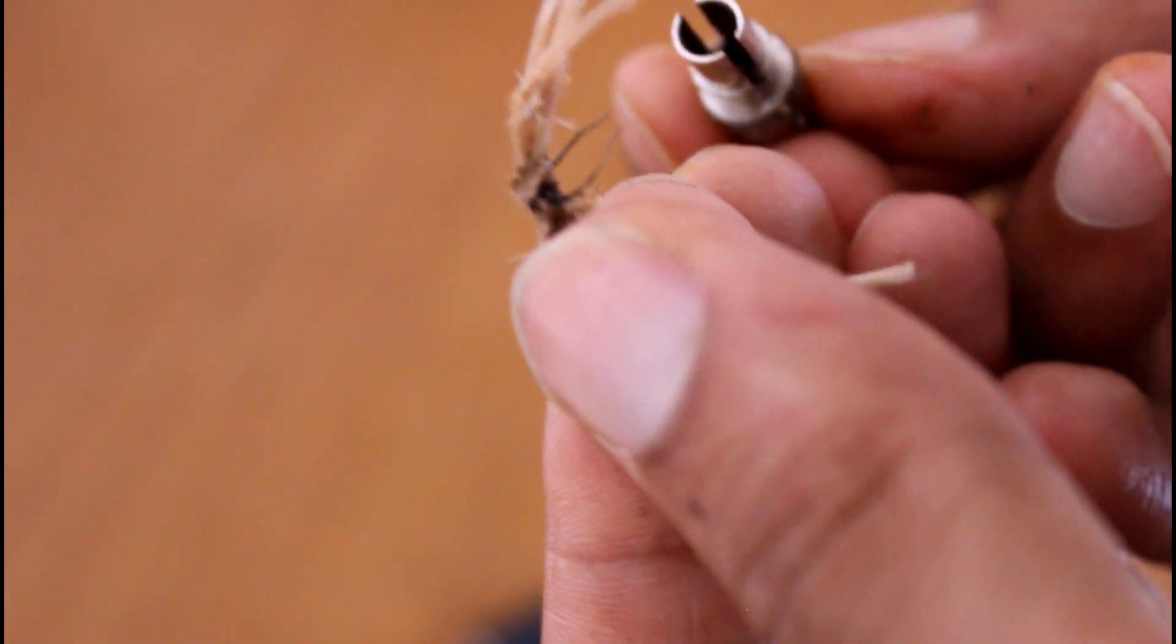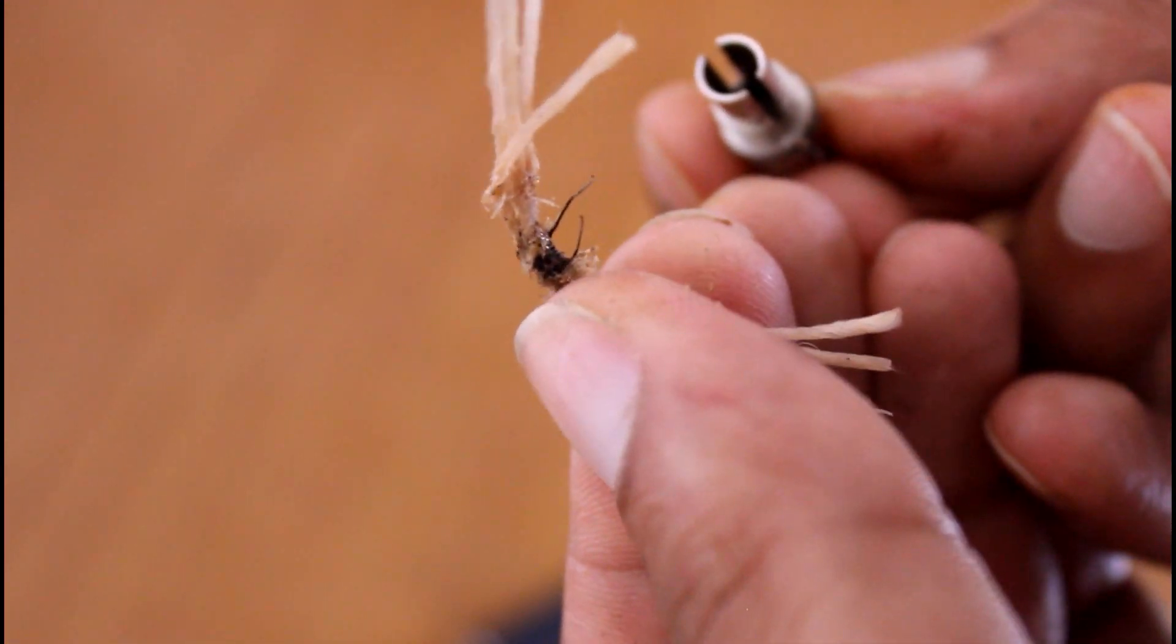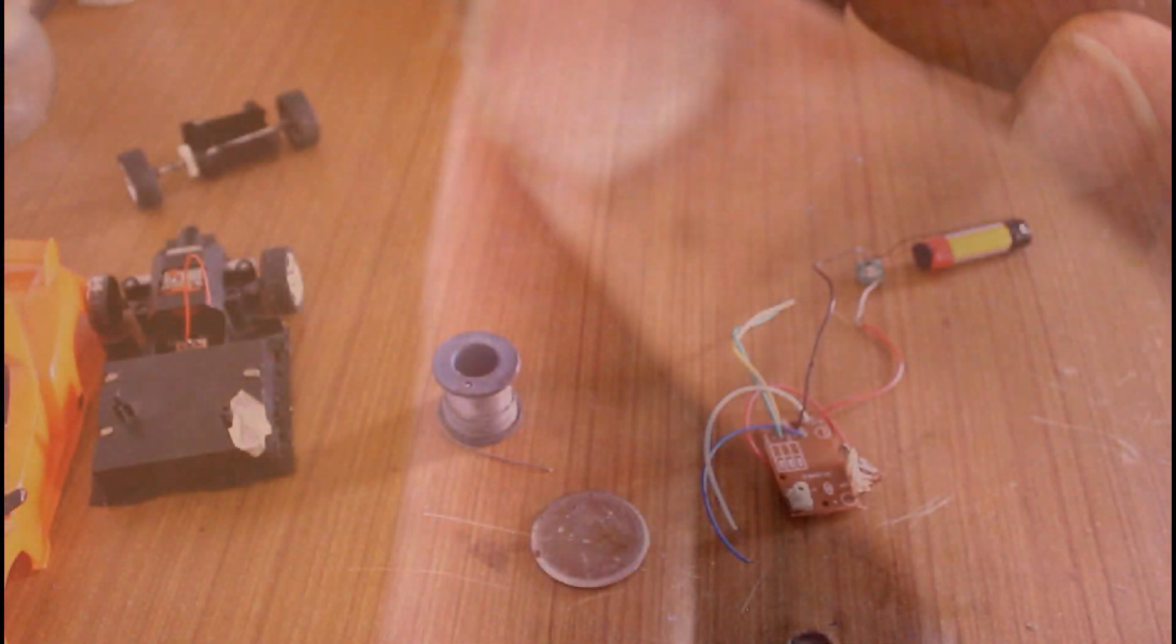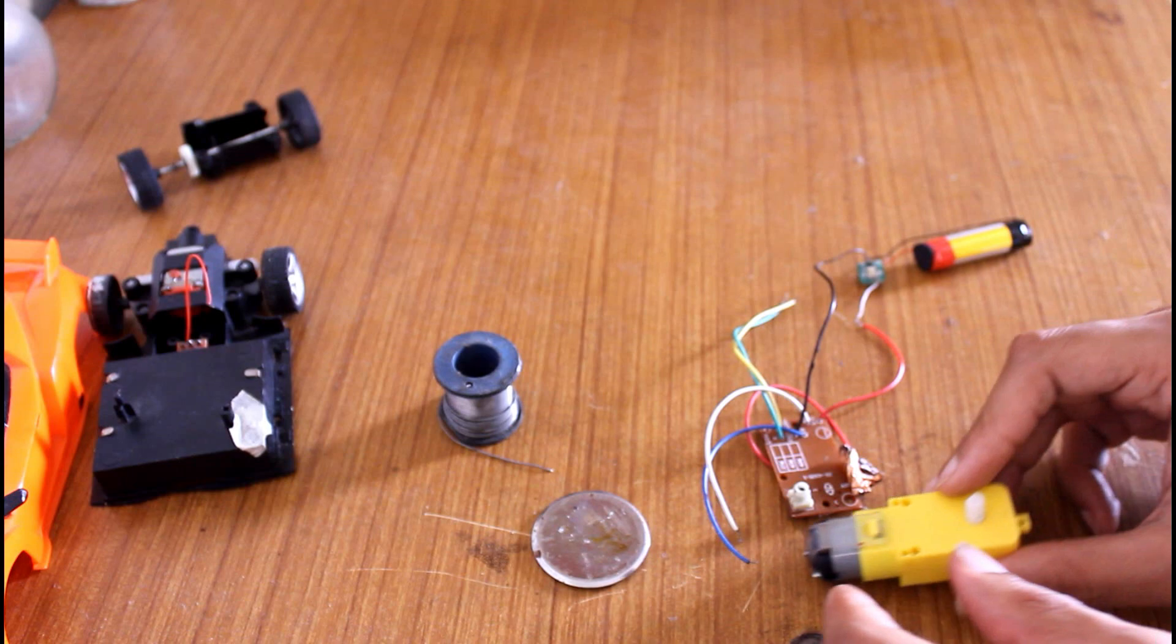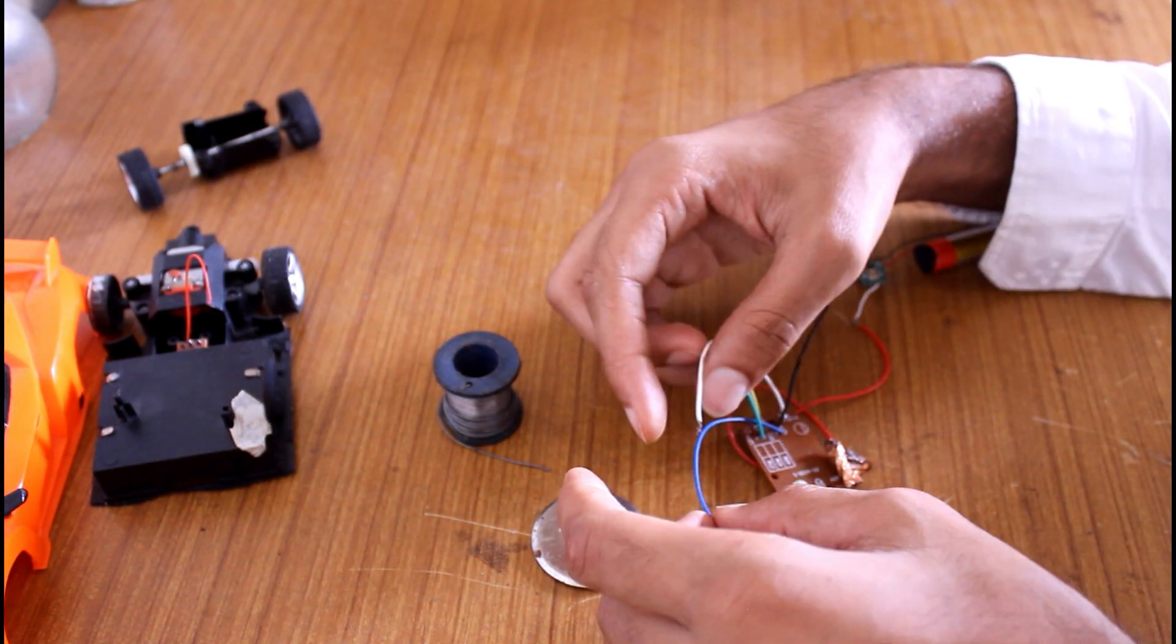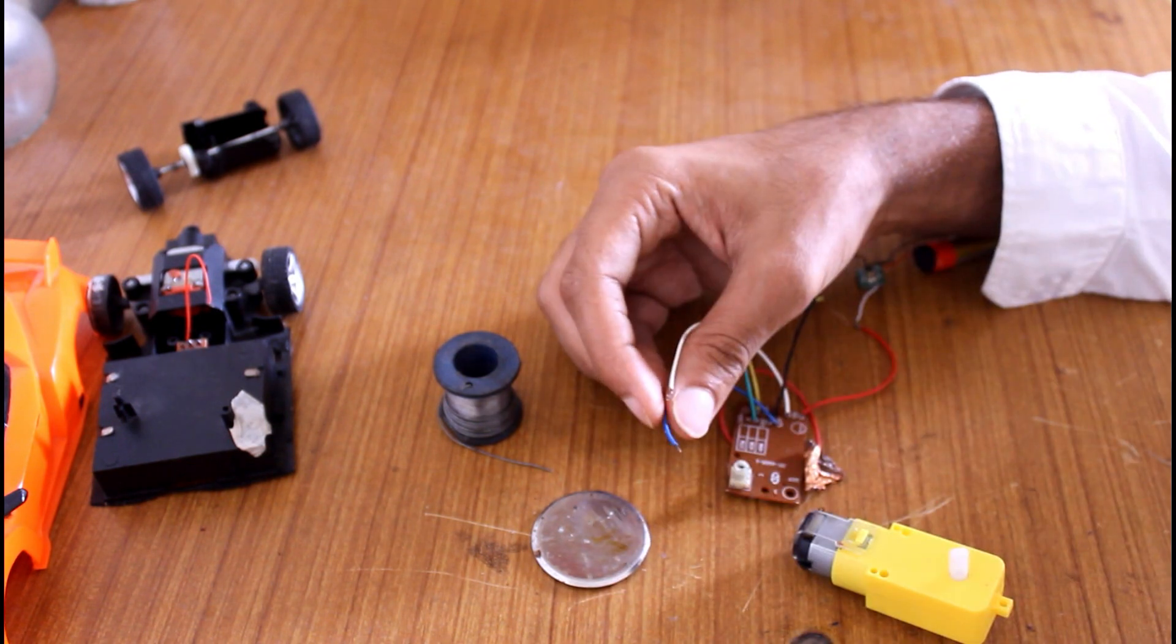Here this coil wrapped on the threads are actually a vaporizer and I am going to use as the ignition of the cannon. And now we are going to connect all the parts together.